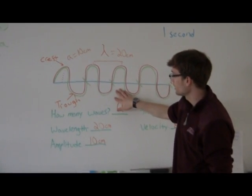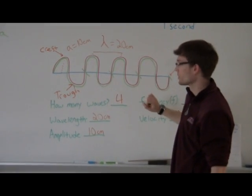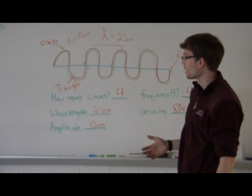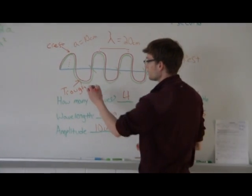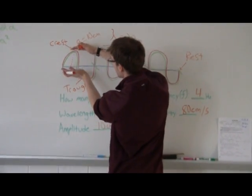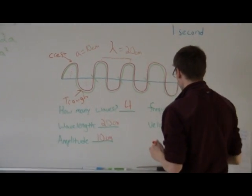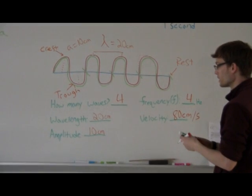Again, if this was a perfect drawing, these would all be the same amplitude. They would be the same distance between the rest and the crest, or the rest and the trough. So you can see that the total height would just be two amplitudes. So the height would equal, of course, 20 centimeters.